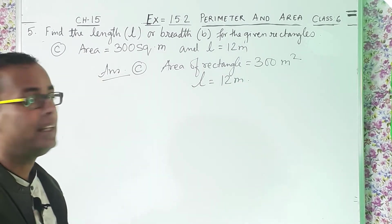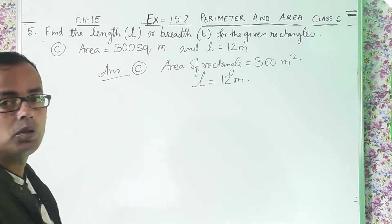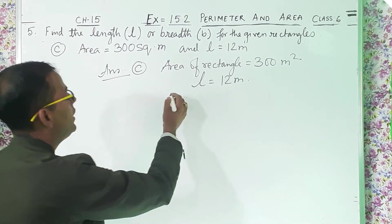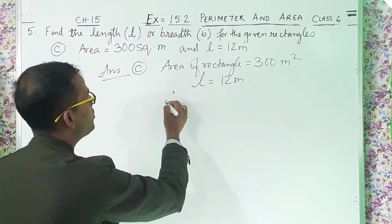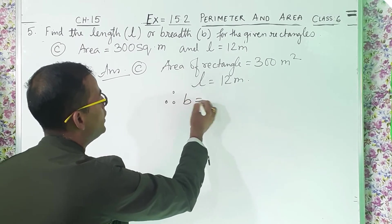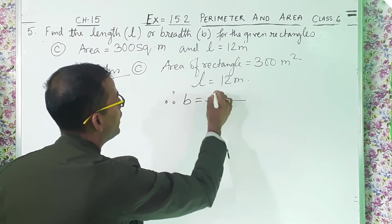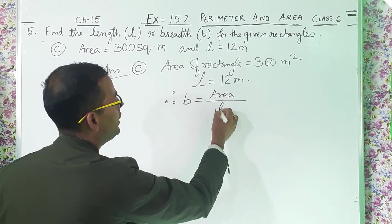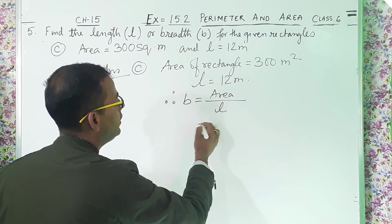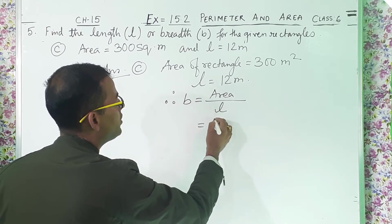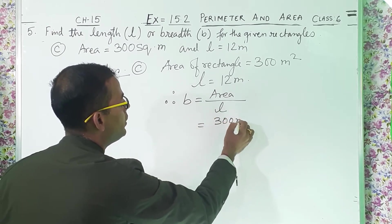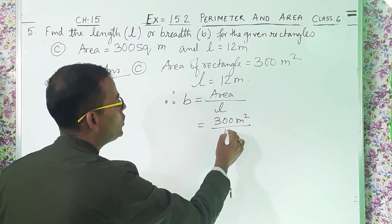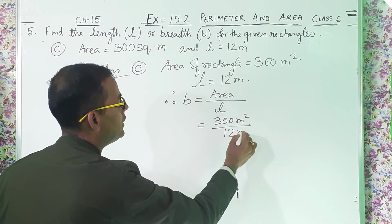Area is given and length is given, so what is left to find? The breadth. Therefore B equals area divided by length — 300 meter square divided by 12 meters.